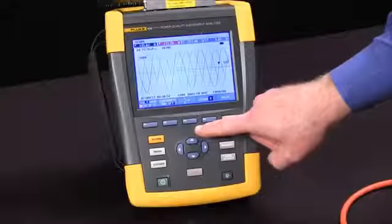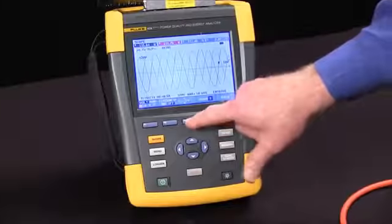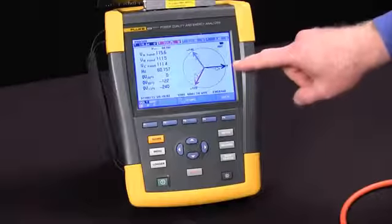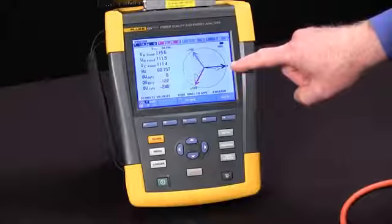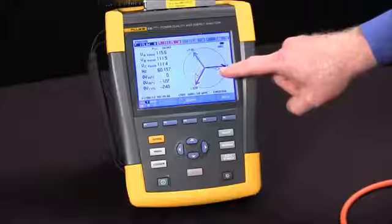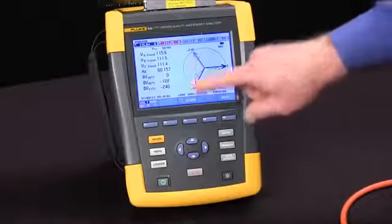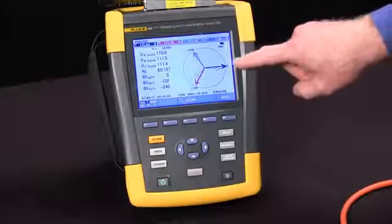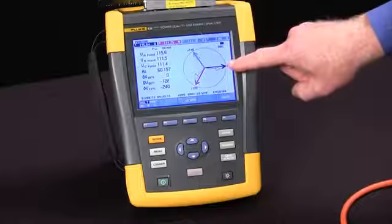If we use the F3 key to pick up a phasor view, we'll see some bold vectors for our voltage and some lighter vectors for our current. If things are properly connected, we should see those vectors being close to in phase with each other.